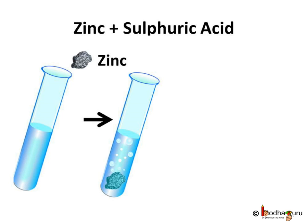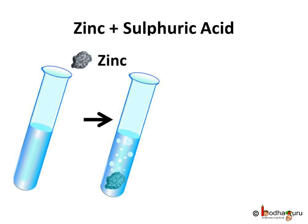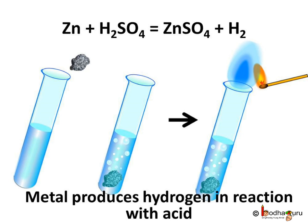Now let us see what happens in the case of a metal. We take some sulfuric acid in a test tube and put a piece of zinc in it. If we bring a burning matchstick near the mouth of the test tube, we will find that the gas coming out is burning with a pop sound. It is hydrogen. So, metals react with acid and produce hydrogen, which burns with a pop sound. This chemical reaction is represented by: Zn + H₂SO₄ = ZnSO₄ + H₂. When zinc reacts with sulfuric acid, we get zinc sulfate and hydrogen gas is released with a pop sound.